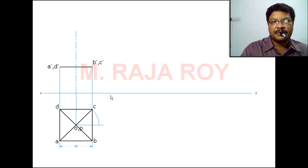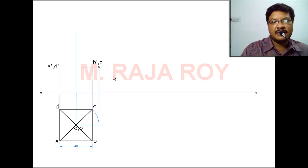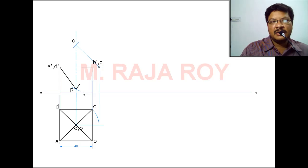From that point I am drawing a projector to the front view. Then I will get this particular point, and from this point I can draw the arc to get the true length. The slanted length is 40, so take 40 as radius and this point as center, draw an arc. This arc length is 40, and then you will get O'. Repeat the same procedure for the bottom side and you will get P'. Now join these points to get the front view of the octahedron.